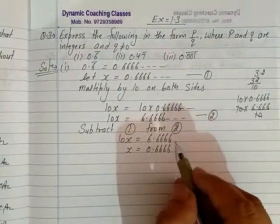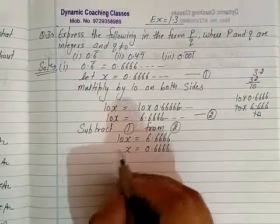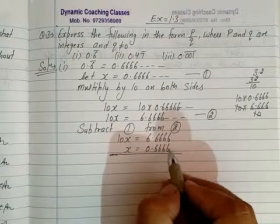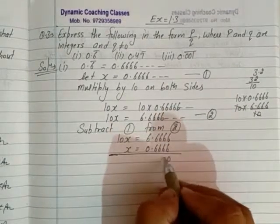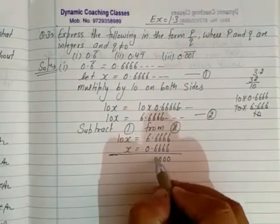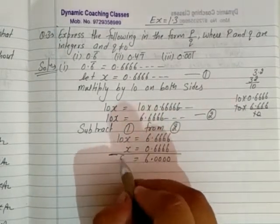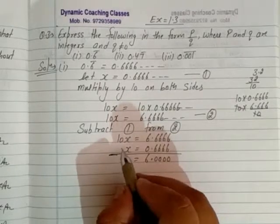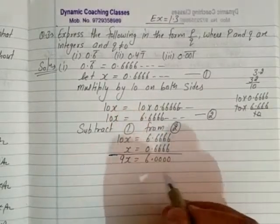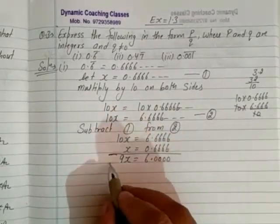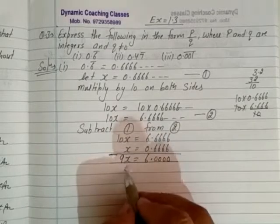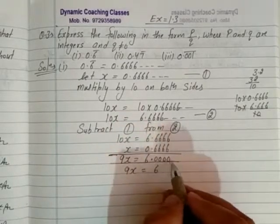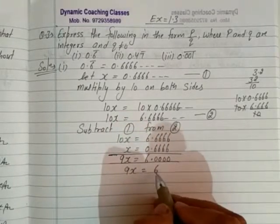Now we subtract the first equation from the second. Here we have 6.6666... minus 0.6666... The repeating parts cancel out. On the left side, 10x minus x gives 9x. On the right side, 6.666... minus 0.666... gives 6. So 9x equals 6.